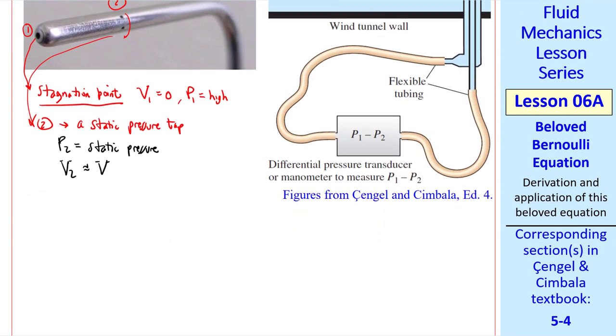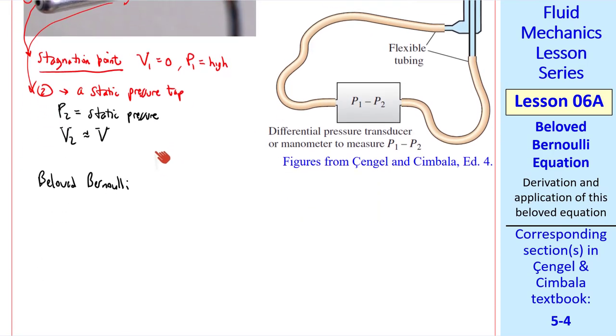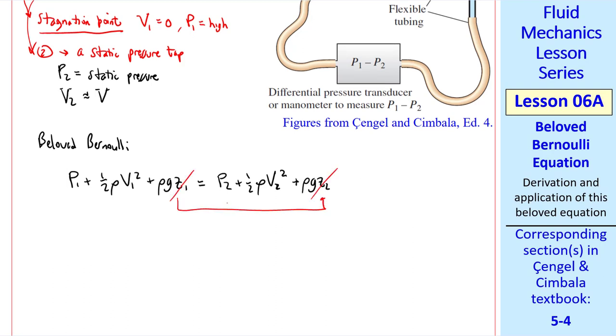Now we're ready to apply beloved Bernoulli along this streamline from 1 to 2. I'll use the pressure form again. P1 + ½ρV1² + ρgz1 = P2 + ½ρV2² + ρgz2. The elevations cancel out, even if this is a liquid...